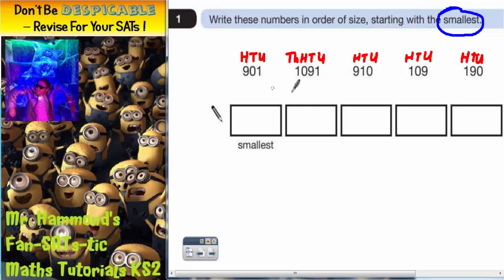So we've got 901, 1091, 910, 109, 190. Now I have put the correct column headings over the top of each number to help you.